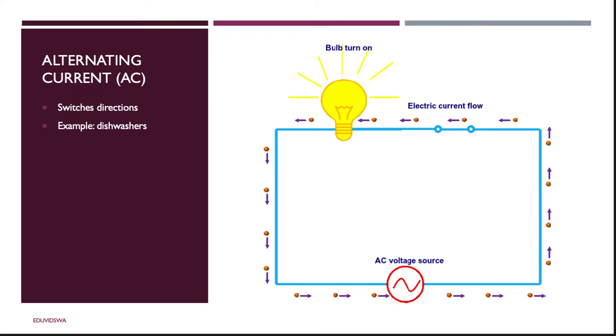In alternating current, however, the current can change directions. An example of this are dishwashers that rely on AC motors. AC is an abbreviation for alternating current here, not air conditioning. Did you know that the type of electricity we receive to our houses is alternating current?